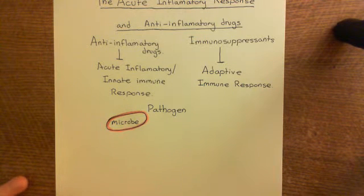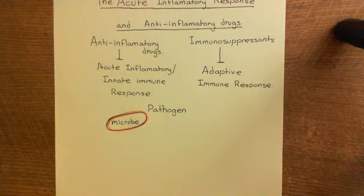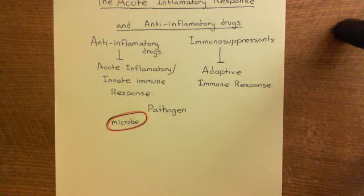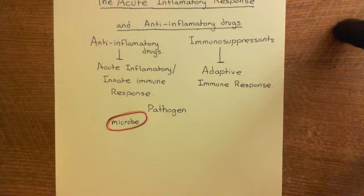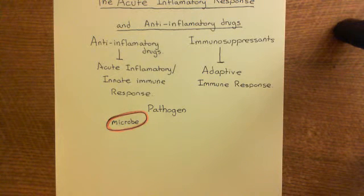We want to eradicate this pathogen. The peripheral tissues do not have the equipment necessary to destroy it. All of the troops that are capable of destroying the pathogen are within the bloodstream, circulating in inactive forms. So what we need to do is get troops out of the blood and into the interstitial fluid to fight this pathogen. The acute inflammatory response is all about this.